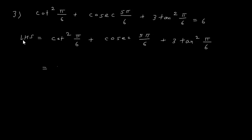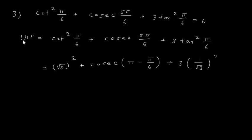LHS equals cot square pi by 6 plus cosec 5 pi by 6 plus 3 tan square pi by 6. The value of cot 30 is root 3, so this is root 3 square plus cosec of 5 pi by 6, which I write as pi minus pi upon 6, plus tan 30, which is 1 upon root 3, so it is 3 into 1 upon root 3 the whole square.